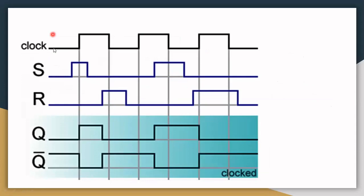This is the timing diagram of the Clocked SR Flip-Flop, with three inputs — clock, S, and R — and two outputs Q and Q dash, with time along the x-axis. When S is high but the clock is low, we don't get any output change. But when clock is high and S is high, the output Q changes to high and Q dash changes to low. When R goes high and clock is also high, the output Q changes to low and Q dash changes to high.